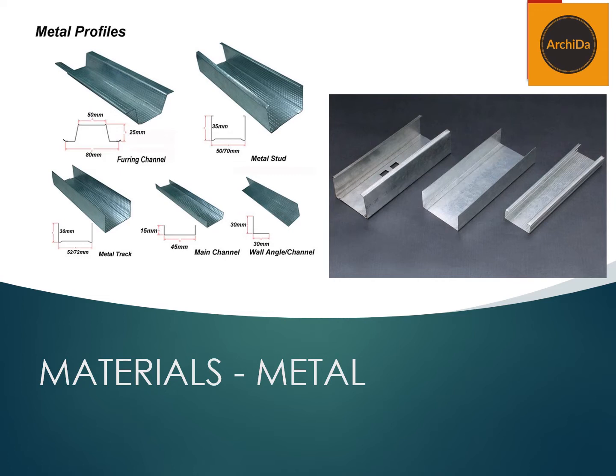For the metal trap, try to notice that in the picture on the left side, the metal trap is positioned on the top and bottom of the frame, while the metal studs will be both the horizontal and vertical framing. The main channel is used for ceilings, and the wall angle is also used for ceilings, which will be discussed in other videos.